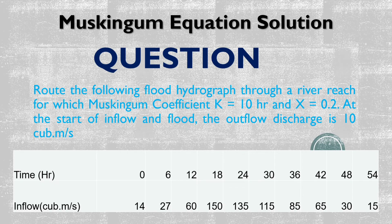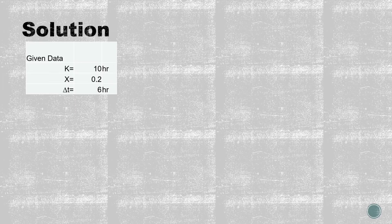Now let's go to the solution. First, we have the given data where K equals 10 hours, X equals 0.2, and delta t equals 6 hours.